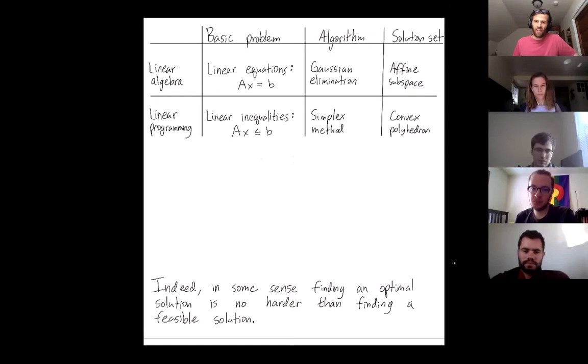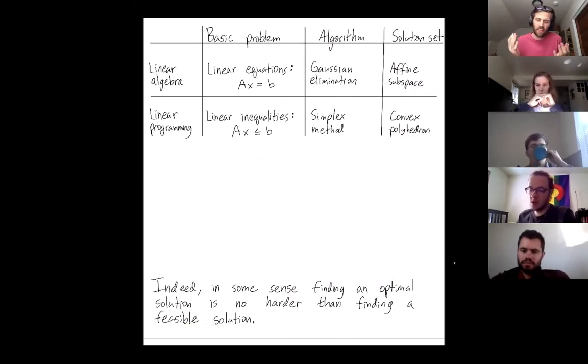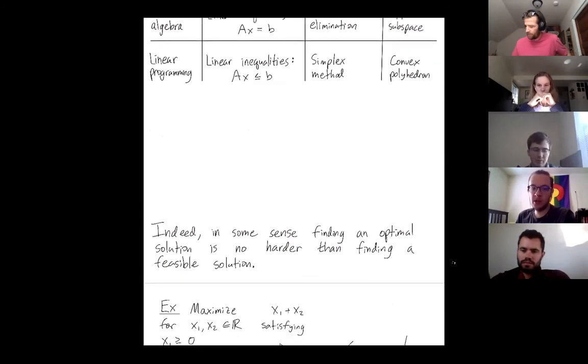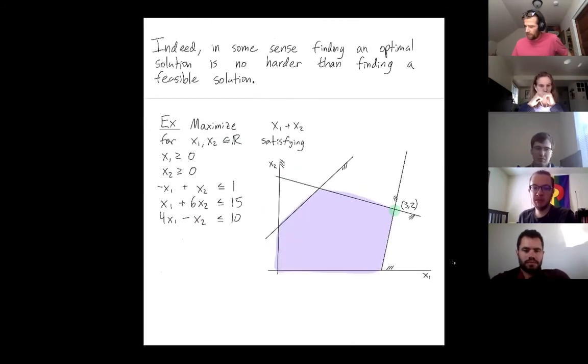In some sense, you could think of linear programming as not having an optimization function. And here's how you do it. So in some sense, finding an optimal solution is no harder than finding any solution in linear programming. And that makes this analogy more direct because in linear algebra, no solution is better than another. So let me explain this by an example.